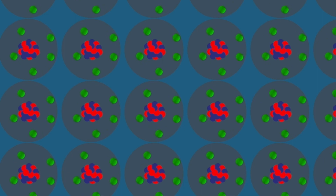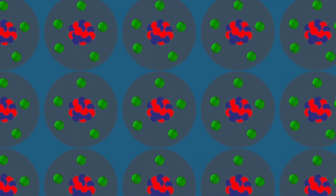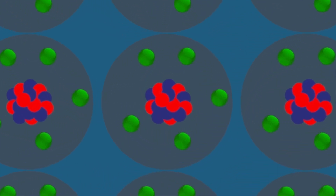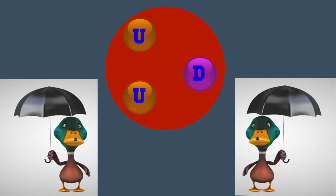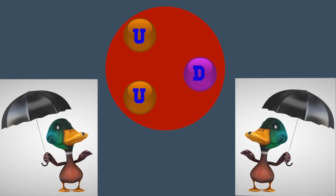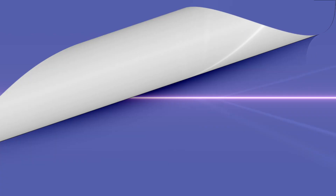The answer lies in the fact that stuff is made up of atoms, which are made up of protons, electrons and neutrons, which in turn are made up of even smaller things. These things are called quarks and gluons. Quarks are particles with partial charges. Yes, partial charges can exist and do exist, despite what you were told in school.